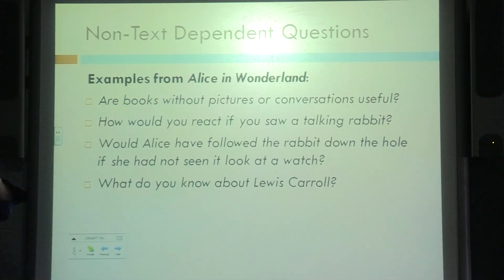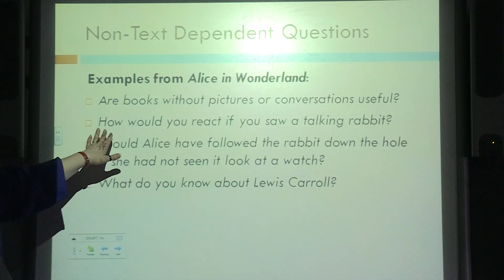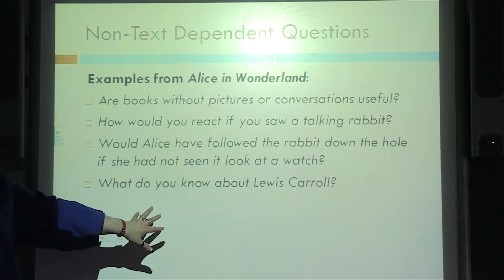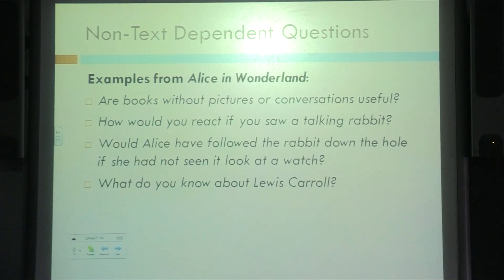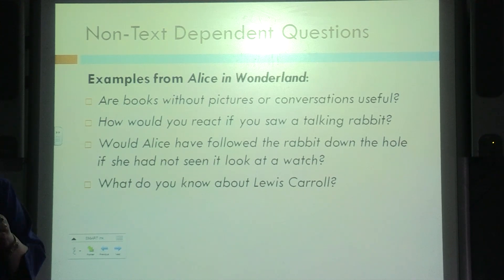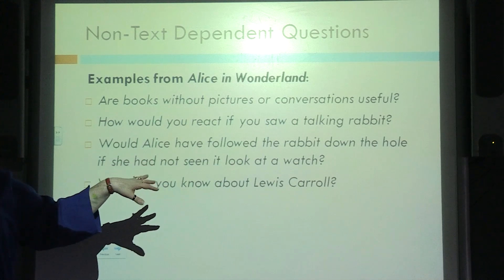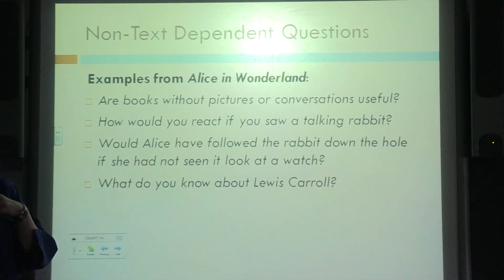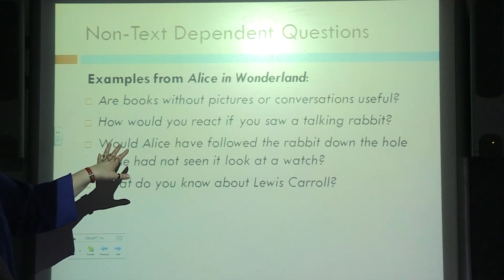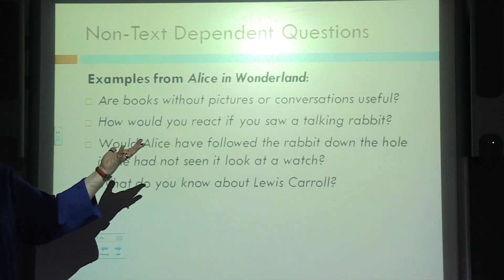An example would be: Are books without pictures or conversations useful? How would you react if you saw a talking rabbit? What do you know about Lewis Carroll? Now these questions are fine for discussion, extension, or a journal topic. But if we're actually assessing our reading standards, these questions do not require students to have read the text at all. They do not require them to use any evidence from the text — a student can answer these questions without ever having looked at the text.